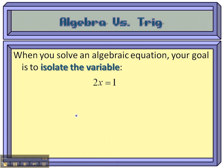Obviously, whenever you go to solve a regular old algebraic equation, what you want to do is try to get the variable by itself. You're isolating the variable. So here you're just dividing both sides by 2. Right, x equals a half. Very easy.